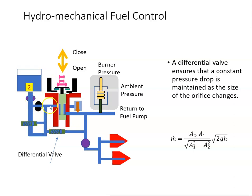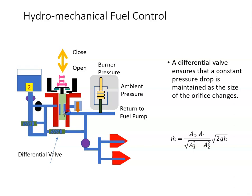In a previous video I showed that the mass of fuel is dependent upon this expression here times some pressure drop. This is the ratio of area A2 — so when the fuel comes in, we have this valve shown in green that goes up and down, changing the cross-sectional area. So this area A2 here varies, while this area coming in here is a constant.